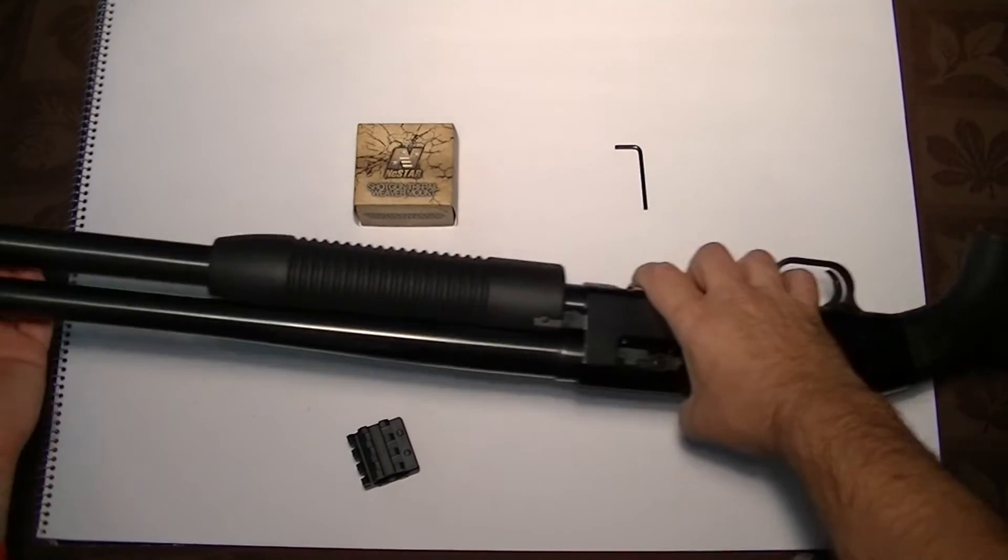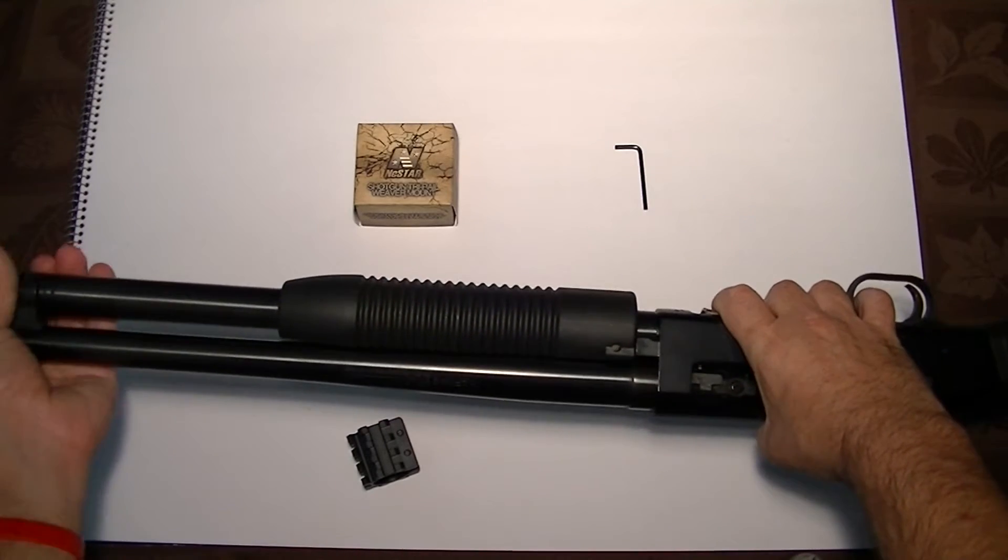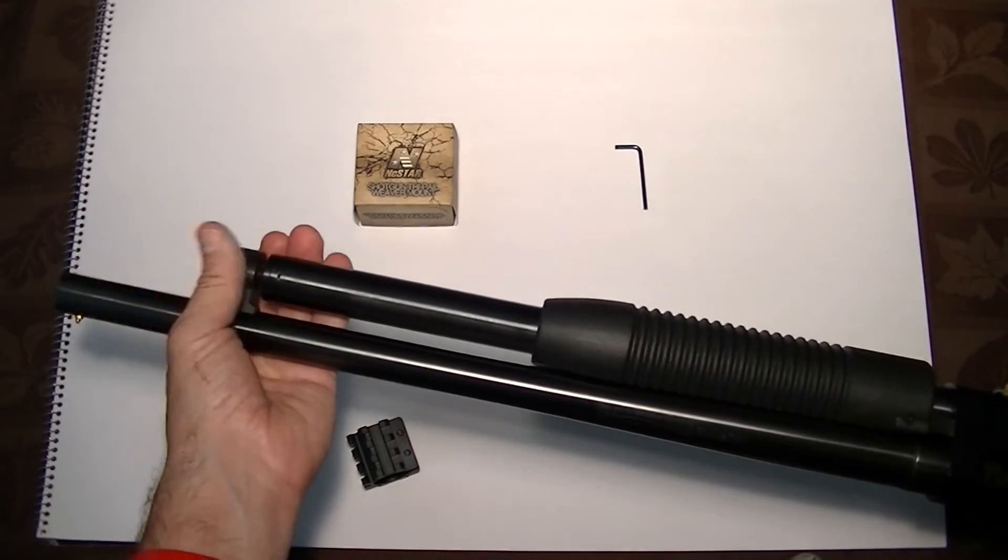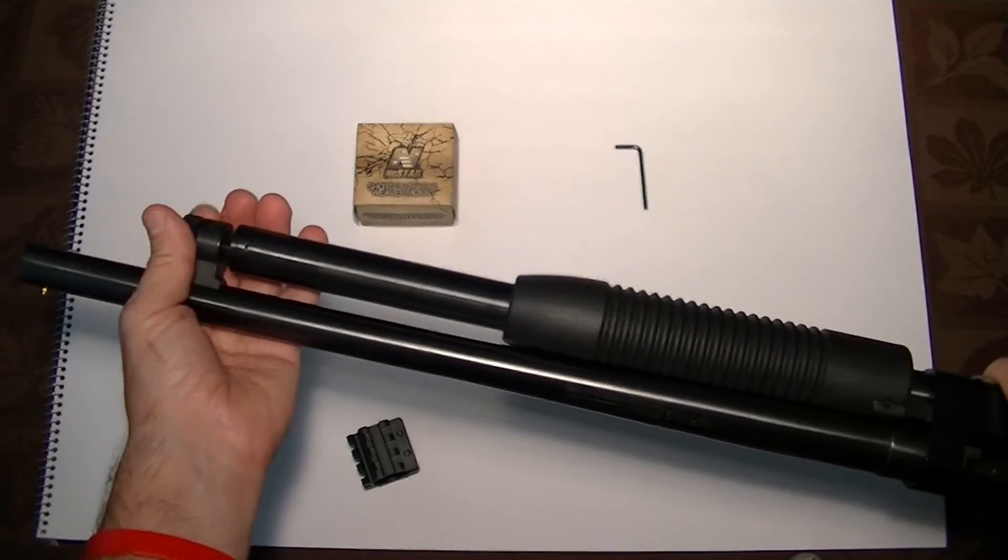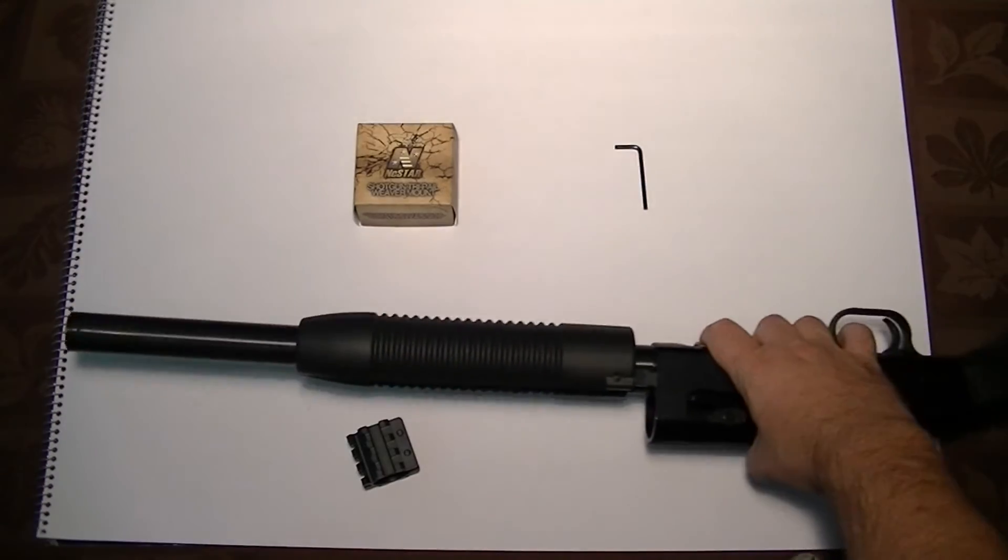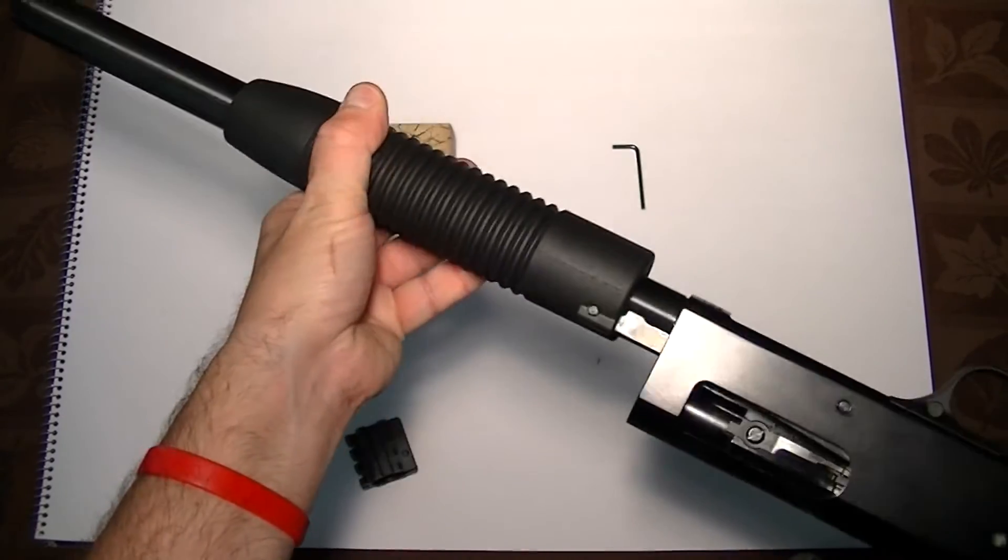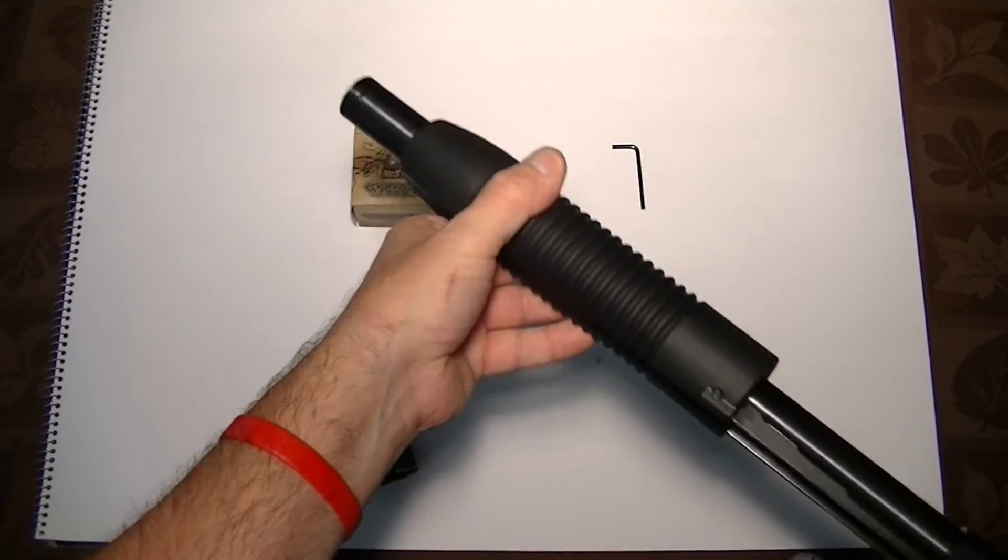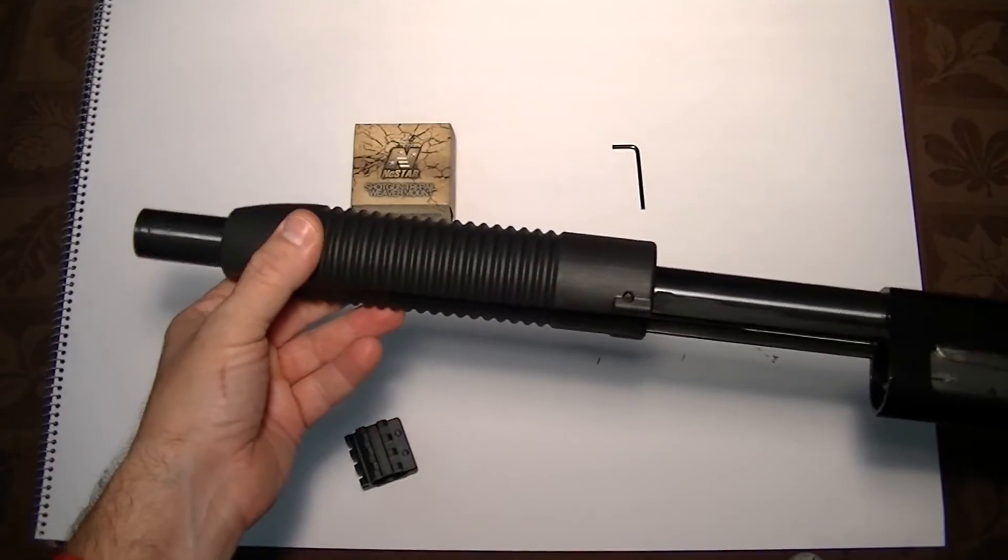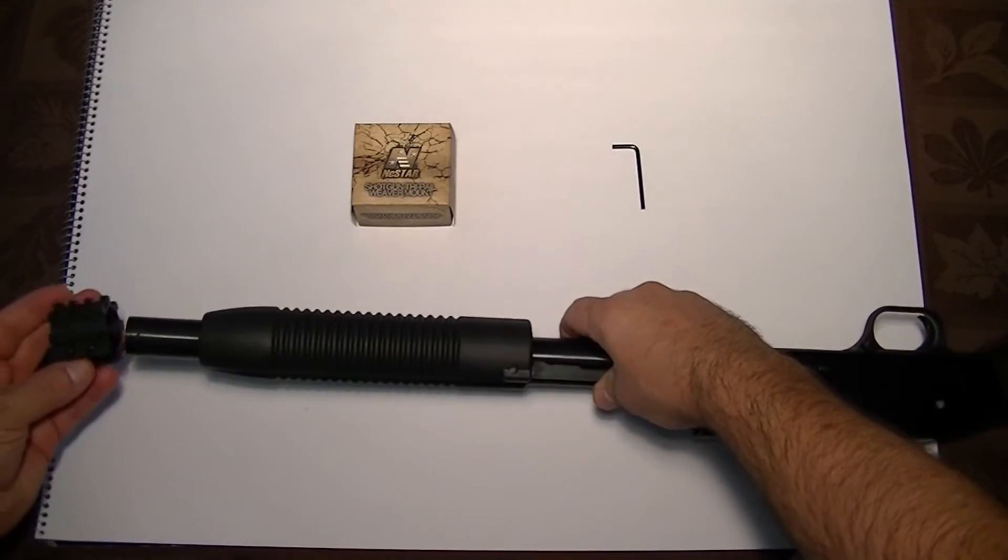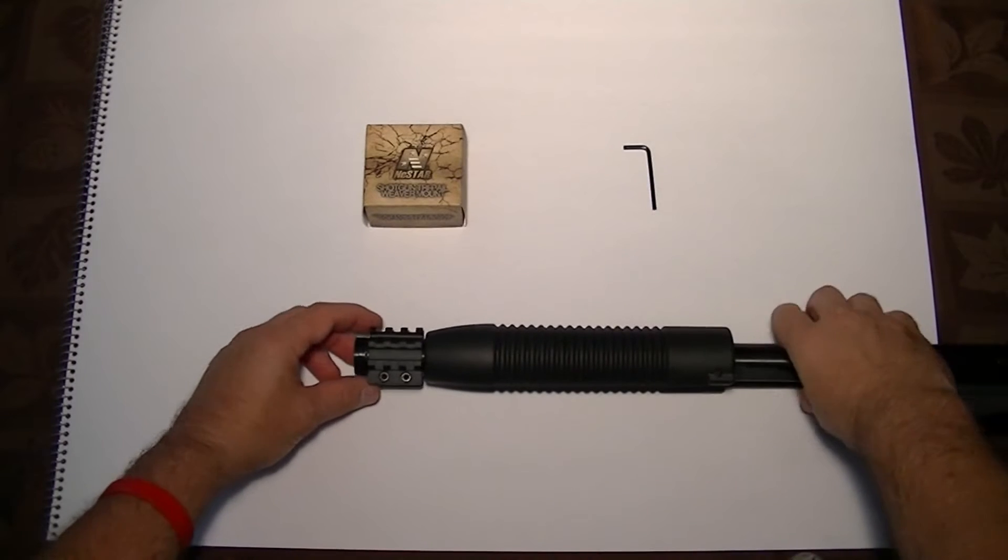First step, you got to take the barrel off the 88. Basically unscrew the lock nut at the top, pull the barrel off. Now take the forehand release and move it all the way forward so you know where it stops at.